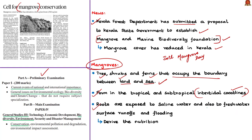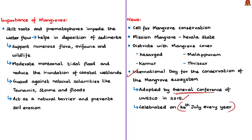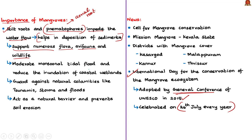Mangroves are also exposed to fresh water surface runoffs and flooding. They get their nutrition from tidal saline and fresh water resources, coastal soils and silt deposited from surrounding land after erosion. From an ecological point of view, their stilt roots and pneumatophores — aerial roots specialized for gaseous exchange — help restrict water flow, which enhances sediment deposition and stabilizes coastal shores. Mangroves provide breeding grounds for fishes and support numerous flora, avifauna and wildlife. They are natural hatcheries, acting as breeding grounds for fish, crabs and waterfowls.